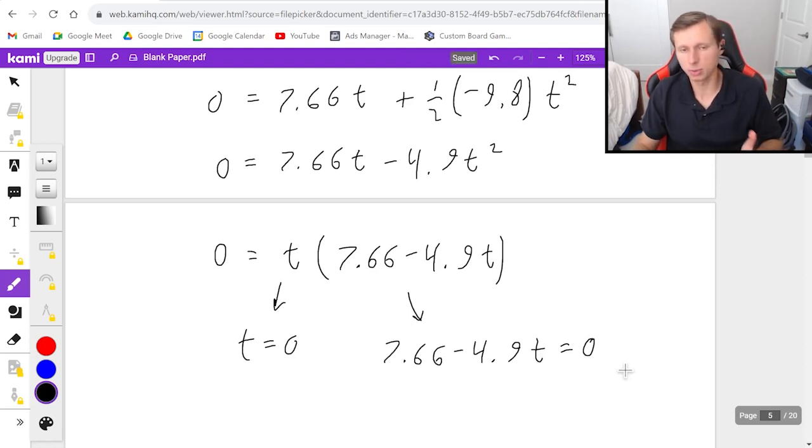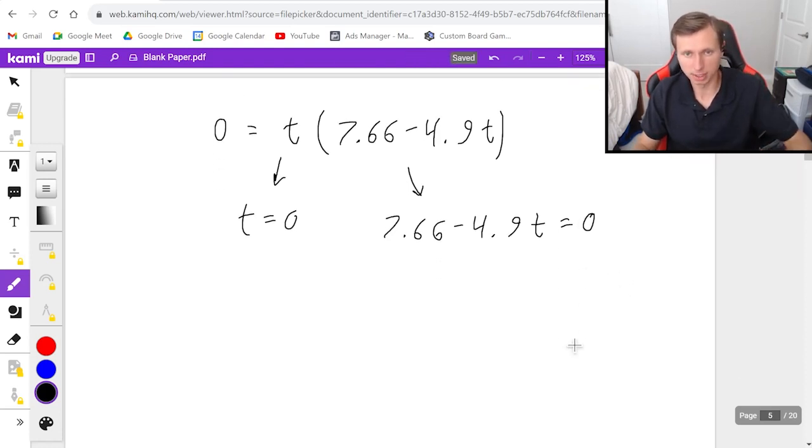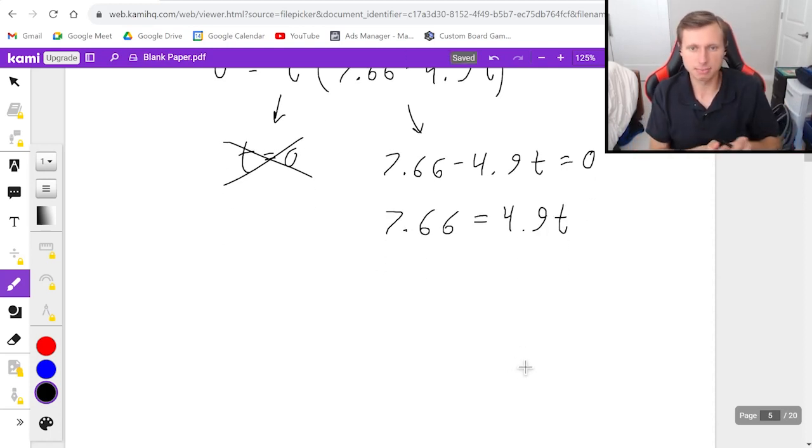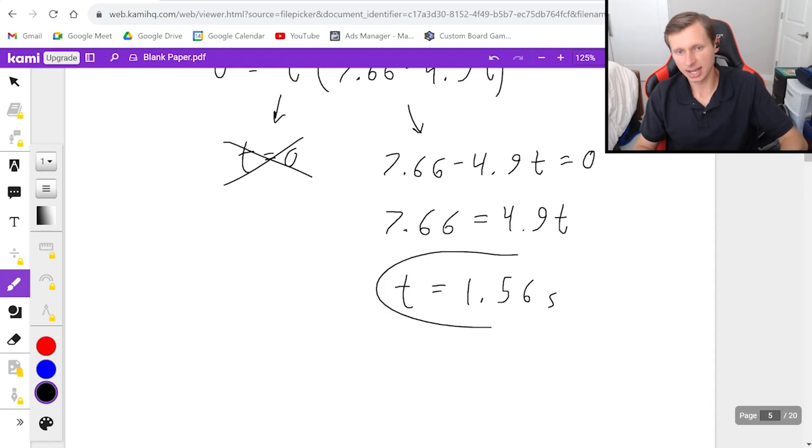You'll notice I set both factors equal to zero. Again, that's from algebra. Now, I think it's safe to say we can eliminate this answer. It makes no sense why we're getting zero as an answer. And whenever you see a ridiculous answer, you should cross it out, especially because the other time is going to be the real answer. So I add 4.9t to both sides, 7.66 equals 4.9t. And then I'll divide both sides by 4.9. And I will get a final time of t equals 1.56 seconds. And there we go. That's the answer for part b.